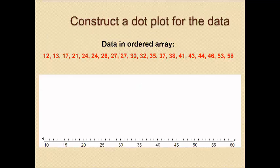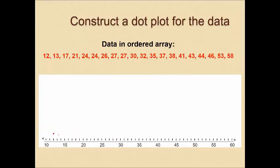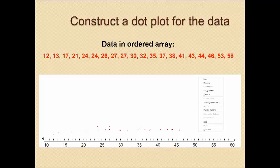Next, dot plots. You go to each value on the number line and place a dot. So 12 gets a dot, 13 gets a dot, 17 gets a dot; then 21, 24, another 24 stacked above it, 26, 27, another 27 above it; then 30, 32, 35, 37, 38; then 41, 43, 44, 46; then 53 and 58. This shows all the data as a dot plot — another way to visually represent the data.